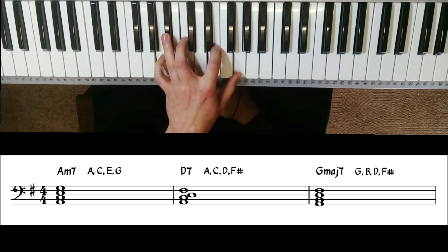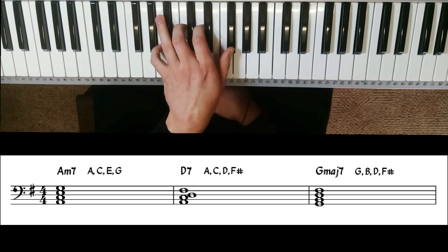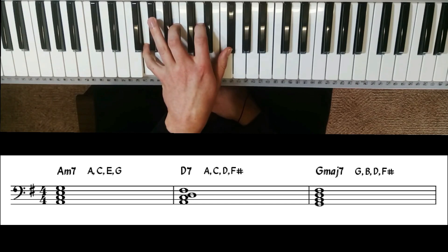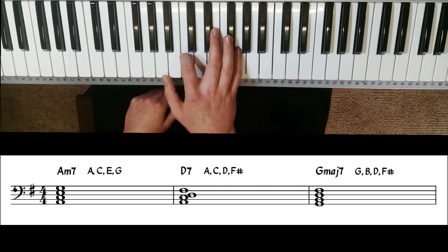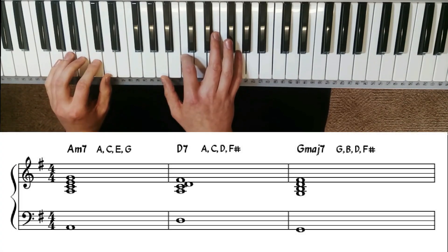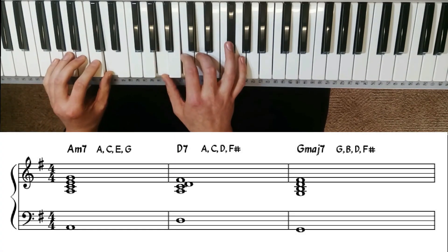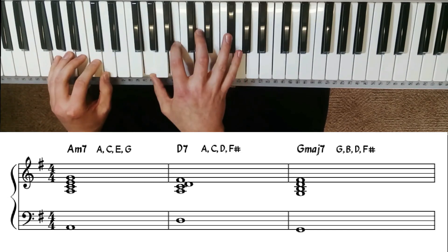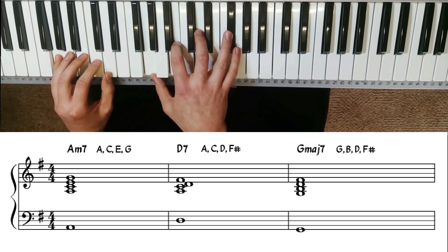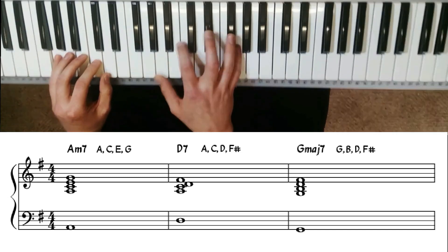A minor 7, D7, G major 7. Just like in the first lesson, we can practice it with a bass line, with some low bass notes, really listening to hear how the chords sound together.